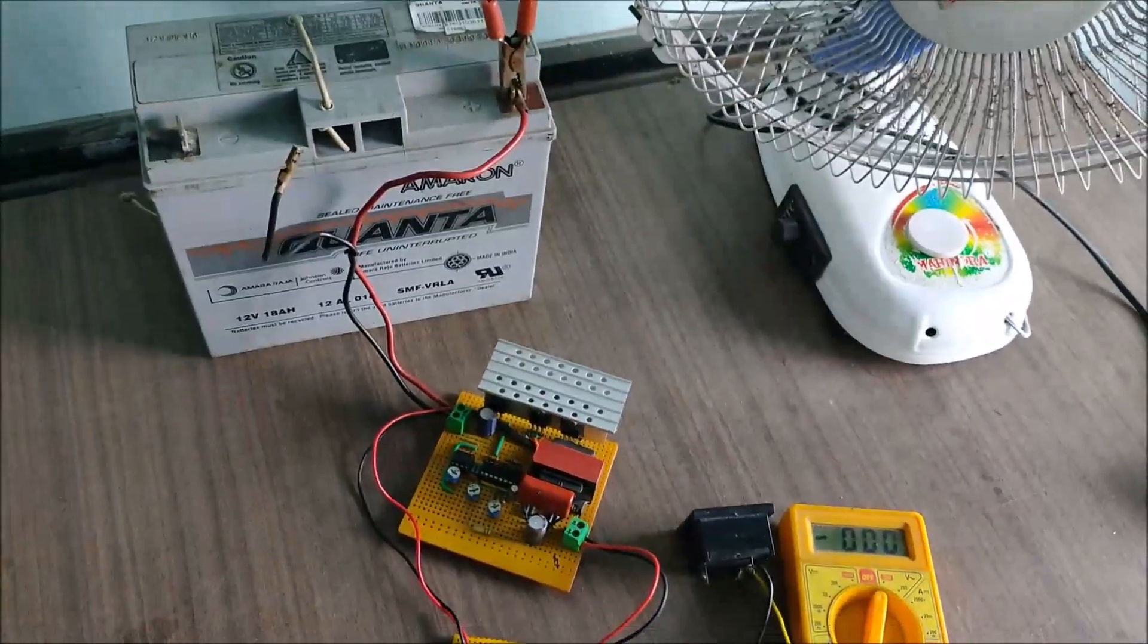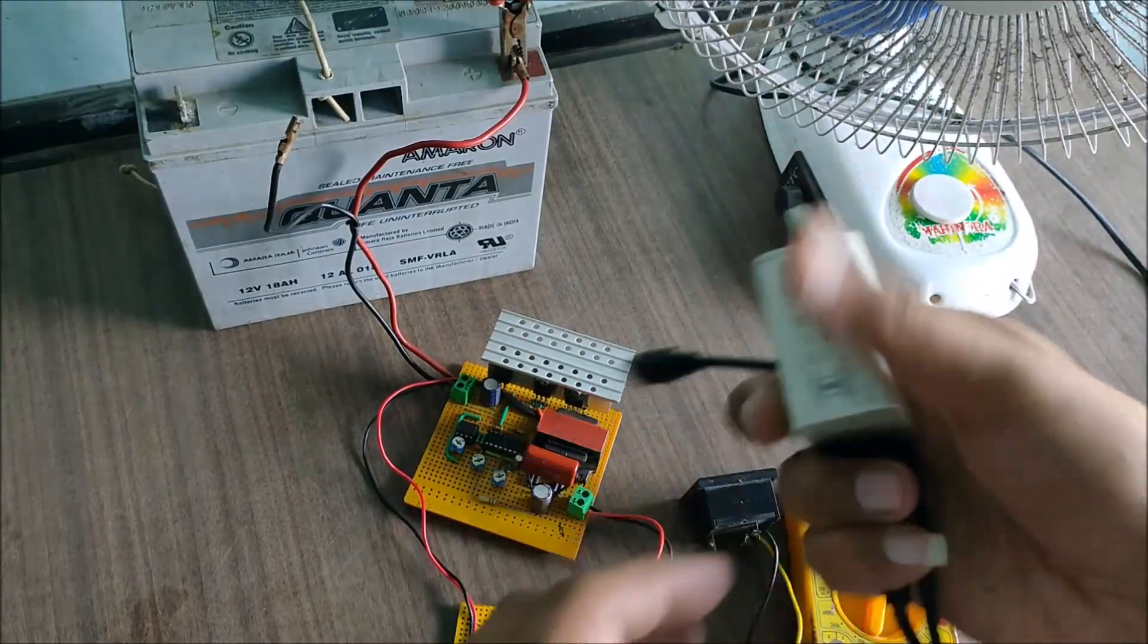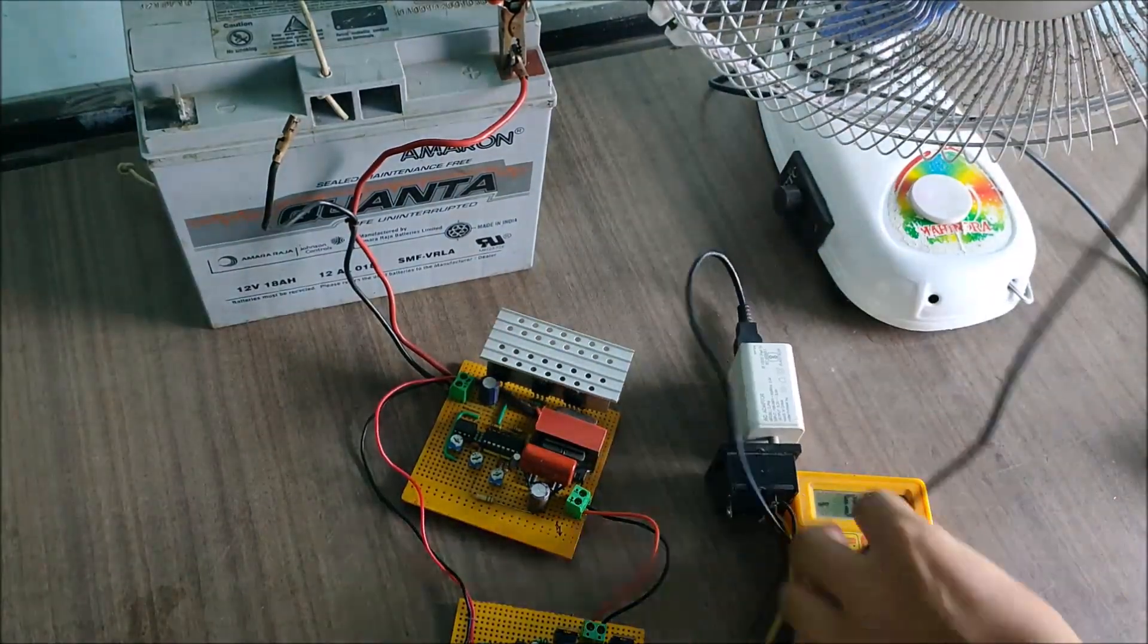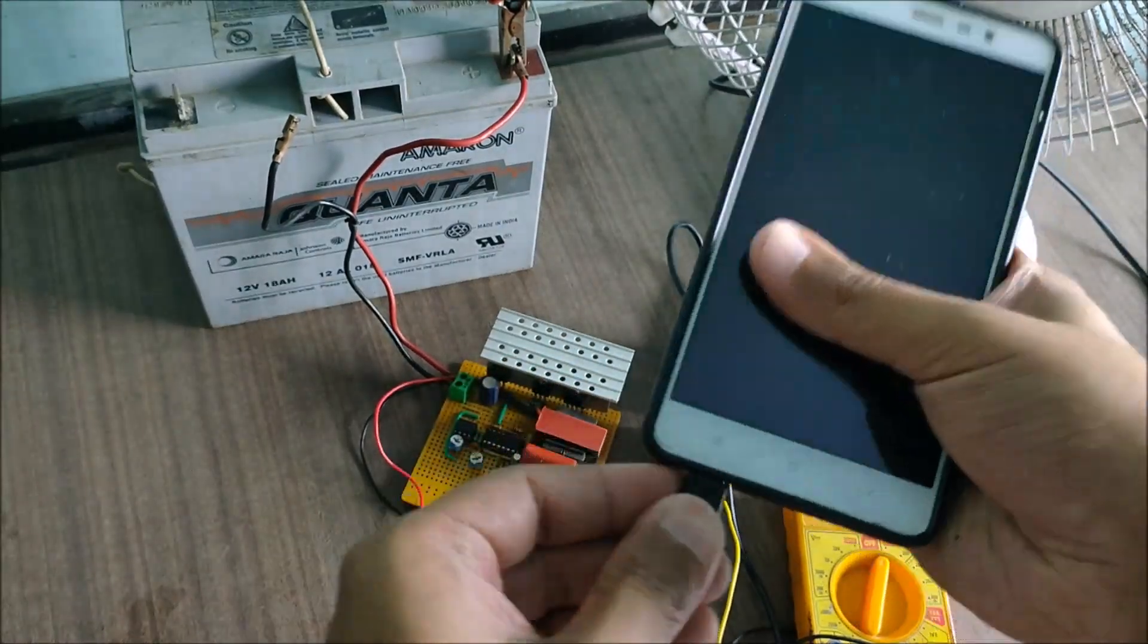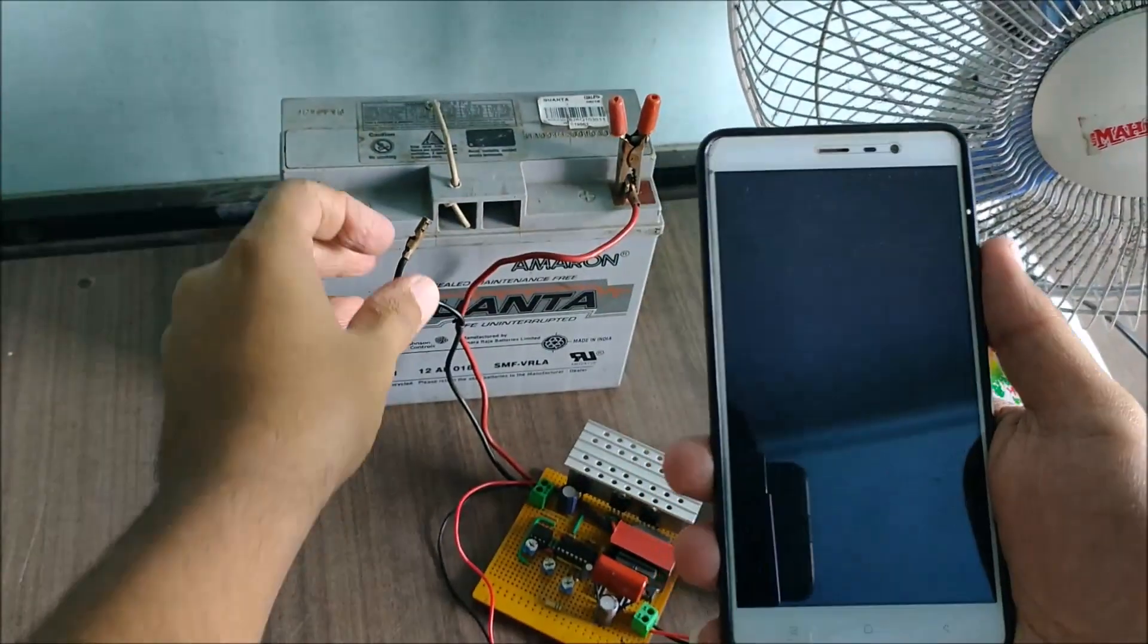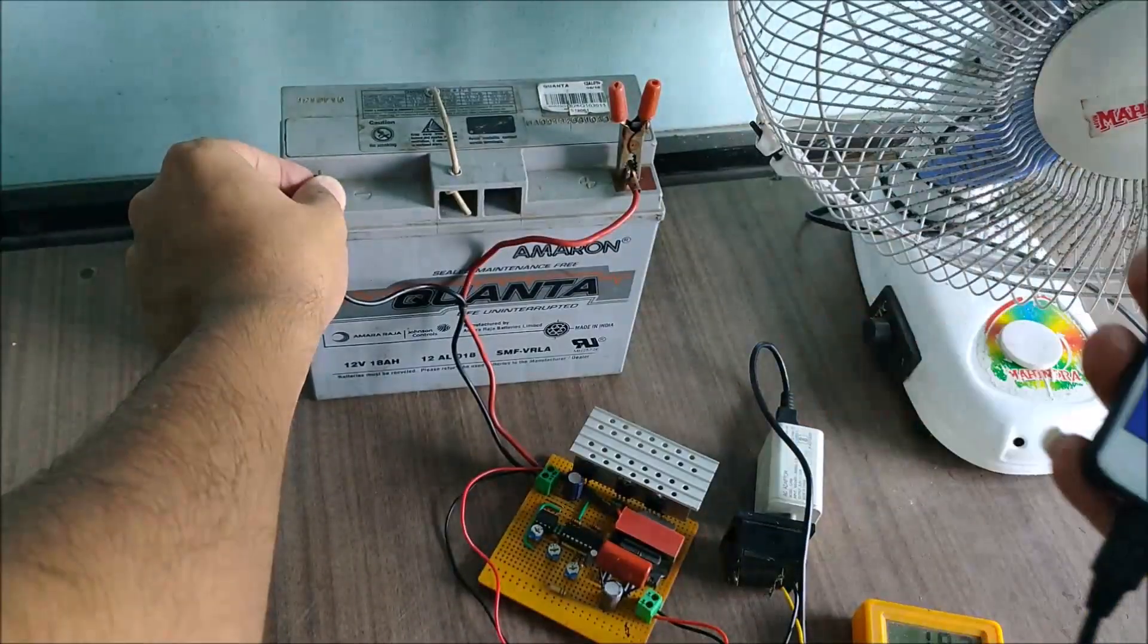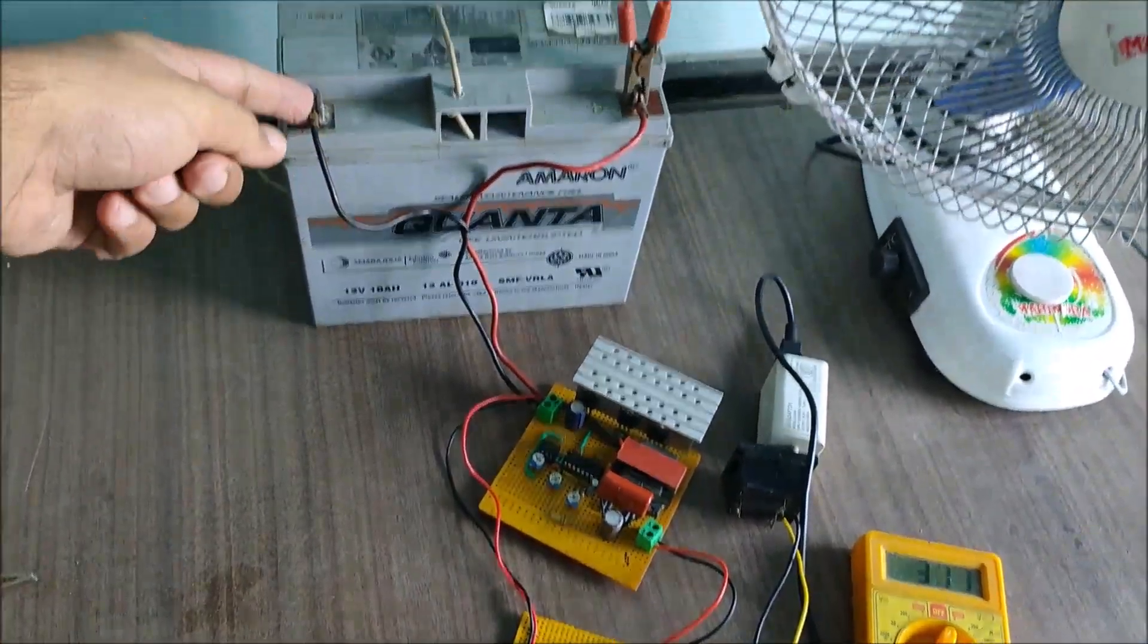As you can see, this inverter drives the 60W fan without a problem. Let us now try to charge our phone with the commercial wall adapter. And as you can see, we can charge our mobile phone without a problem. This system can easily power small to medium appliances like a laptop charger, phone chargers, a small table fan, CFLs and an incandescent bulb.